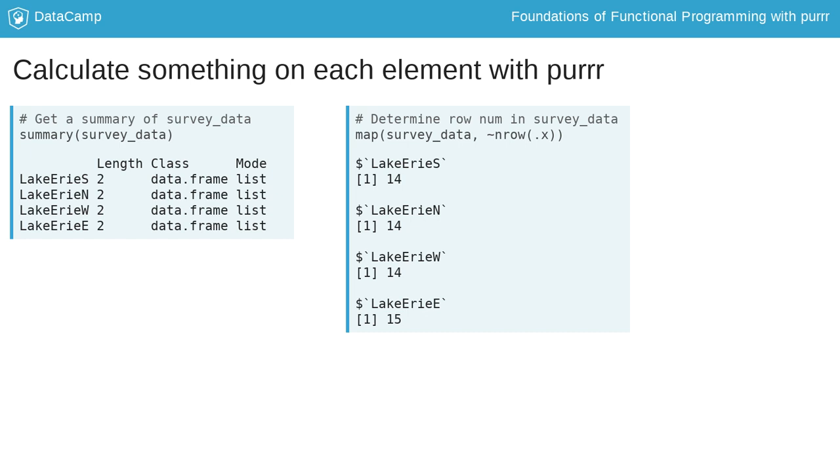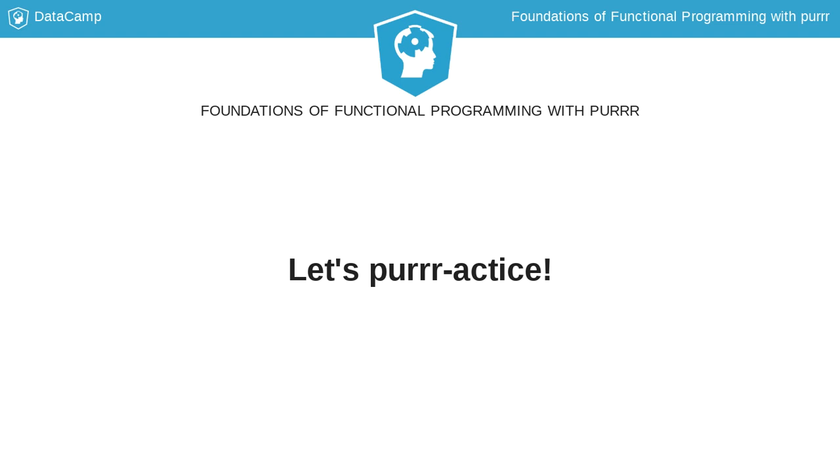One possible issue here is that the output of map is another list. When we solve this problem with a for loop, we got a data frame. We got our answer here, but it might not be the form we want. But before we learn how to get different outputs with purrr, let's have you take a swing at map.